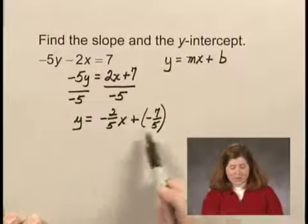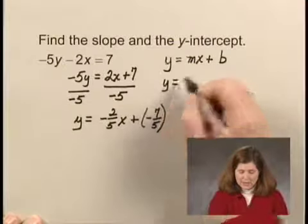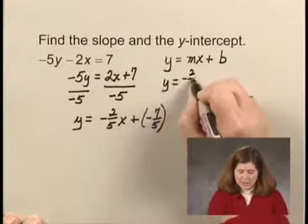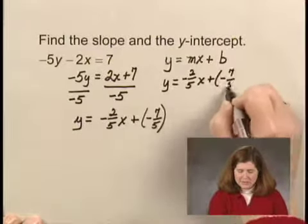Since I've solved for y, this is now in this form. And I'll write it underneath here: y = -2/5x + (-7/5).